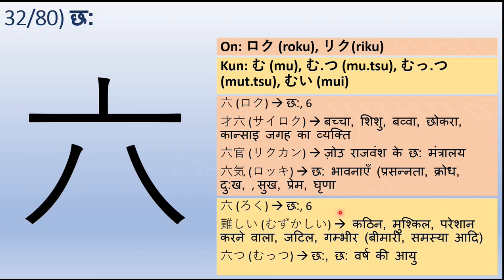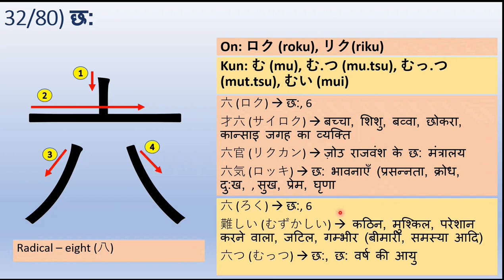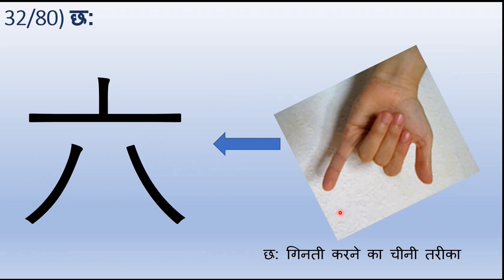Muttsu — muttsu ka arth hai chhe ya chhe varsh ki aayu. Ye, jaise ki hamne kaha, arth ke radical se aaya hai aur ye iska stroke order hai. Aap dekh sakte hain, ye jo hum dikha rahe hain ek haath se — ye hai chhe ginti karne ka chini tariqa. Chini ginti mein is tarah se haath ko dikhaya jaata hai jab hum chhe ki ginti karte hain, aur isi se is chinha ki utpatti hui hai.